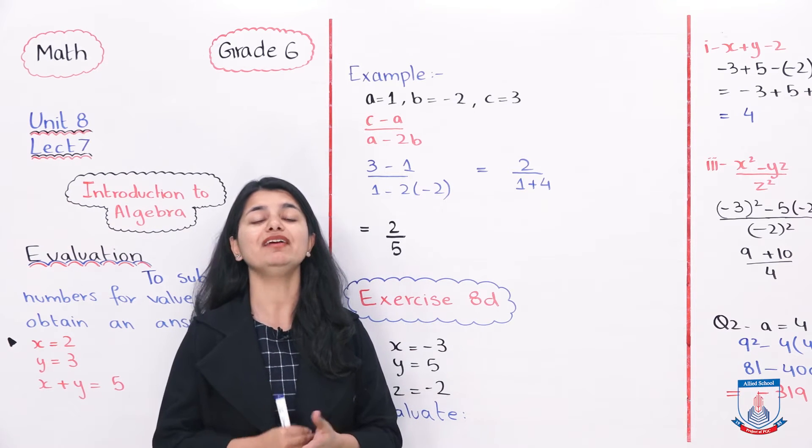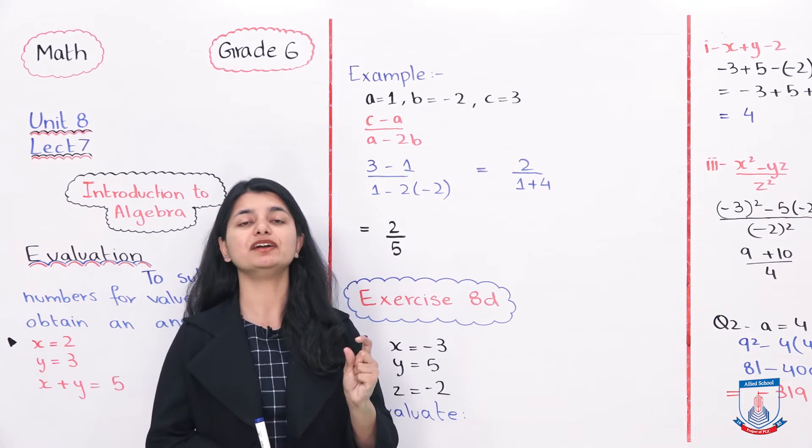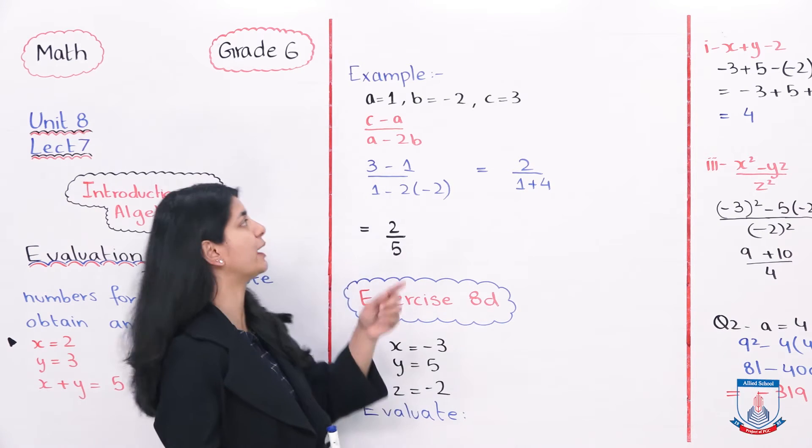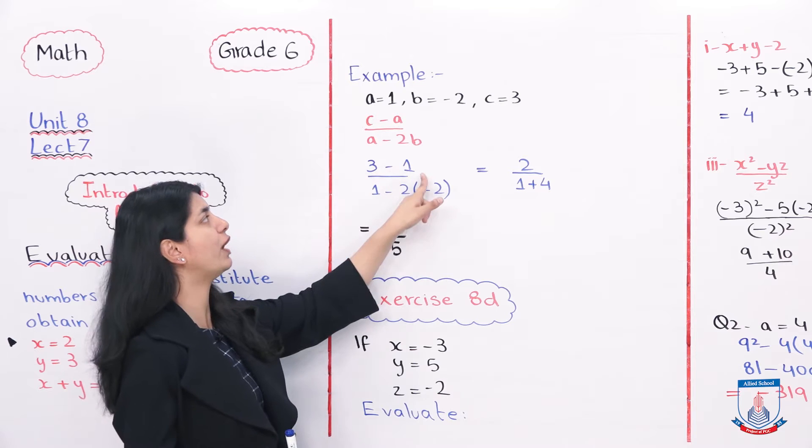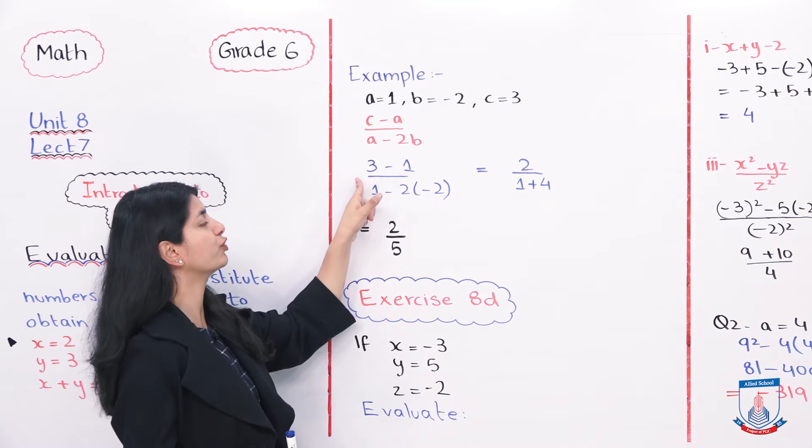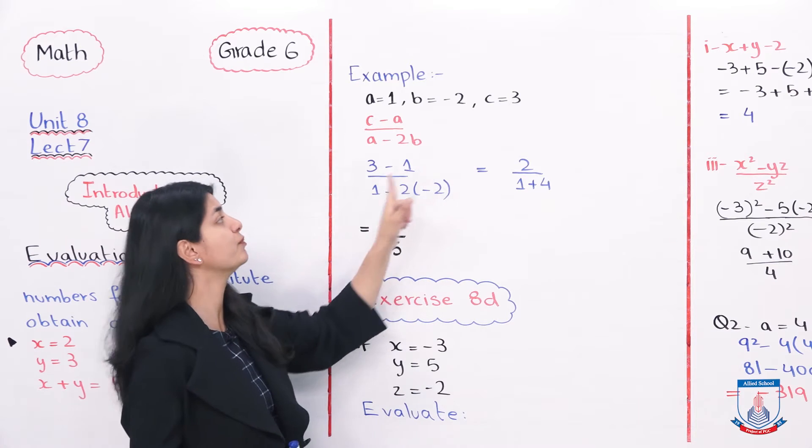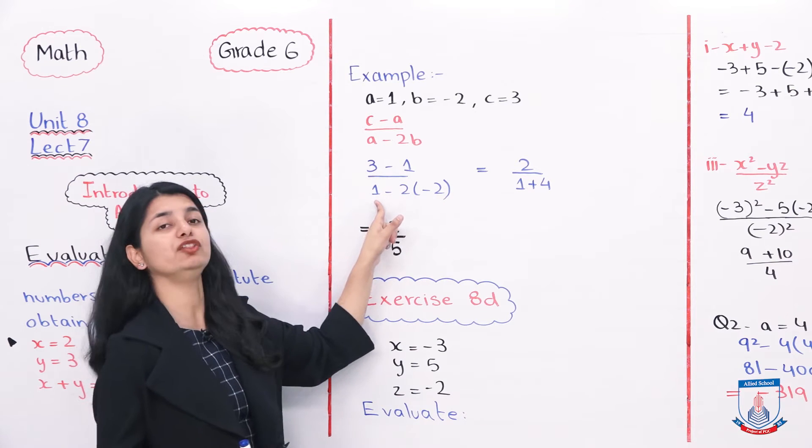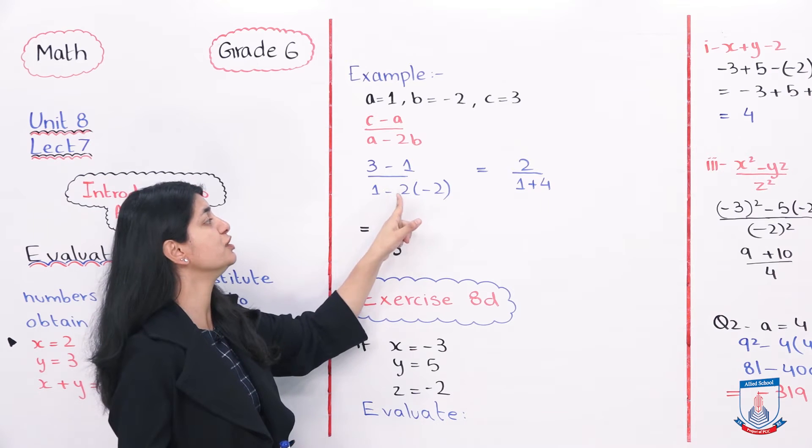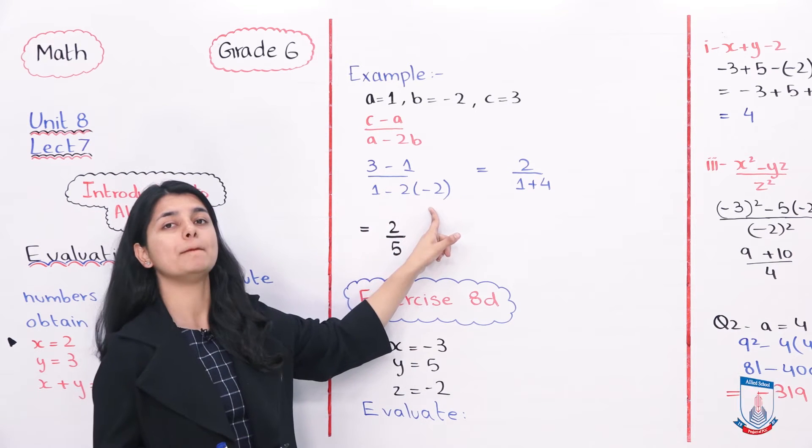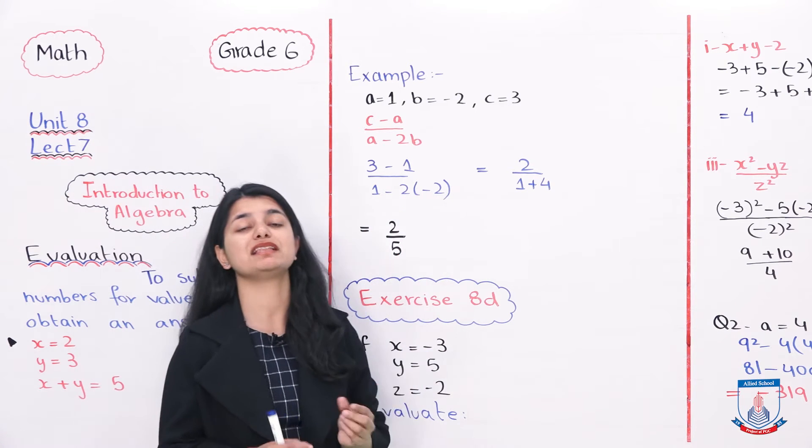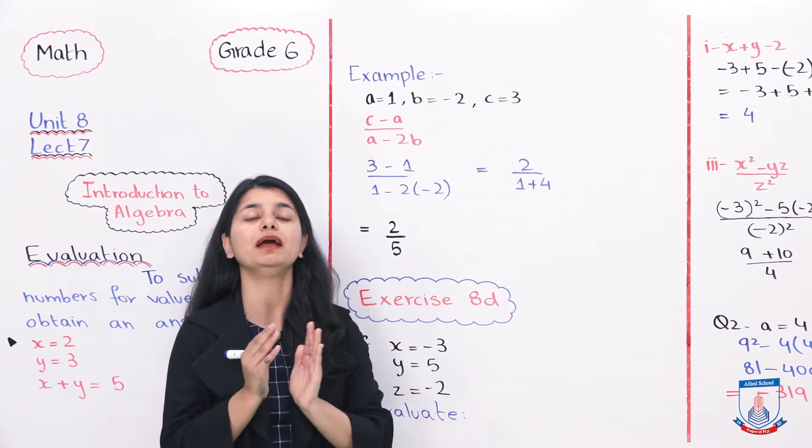It's very simple. You have to replace them with the values. What is a? 1. c value is 3. So 3 minus 1. a again, so a value is 1. Minus 2 into b value minus 2. You can write brackets for the value if you have a negative sign.